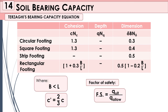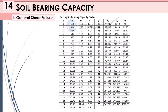For the factor of safety, that is your ultimate bearing capacity divided by your allowable bearing capacity. This is the table I mentioned — you have your internal angle of friction, and corresponding values for Nc, Nq, and Nγ, ranging from zero to fifty degrees.